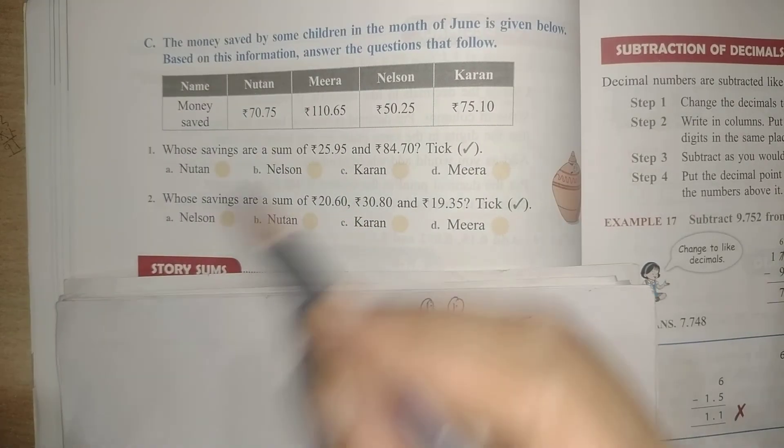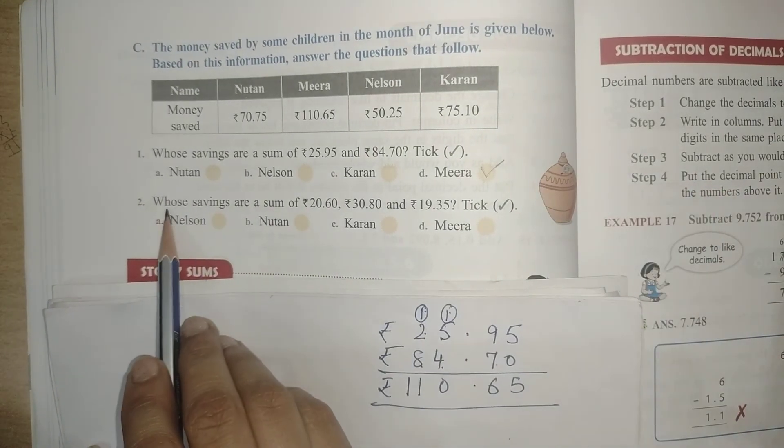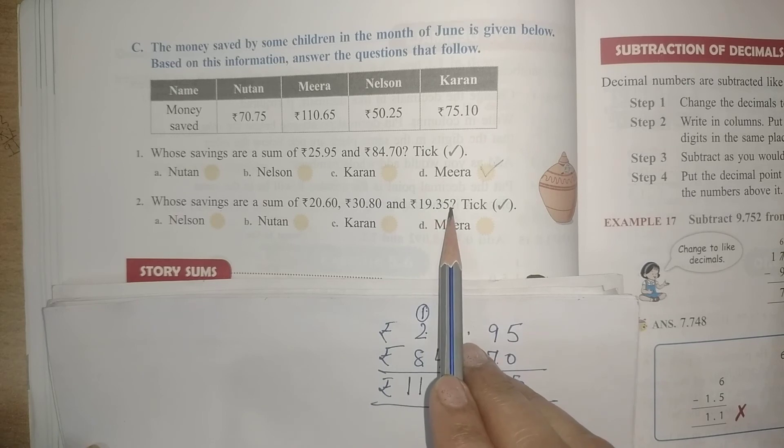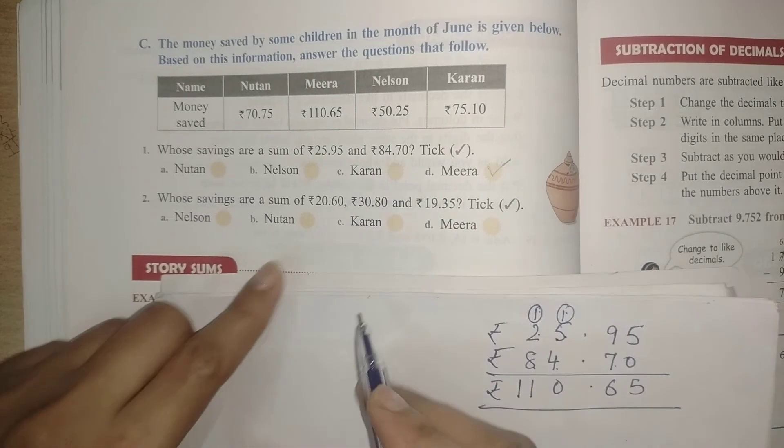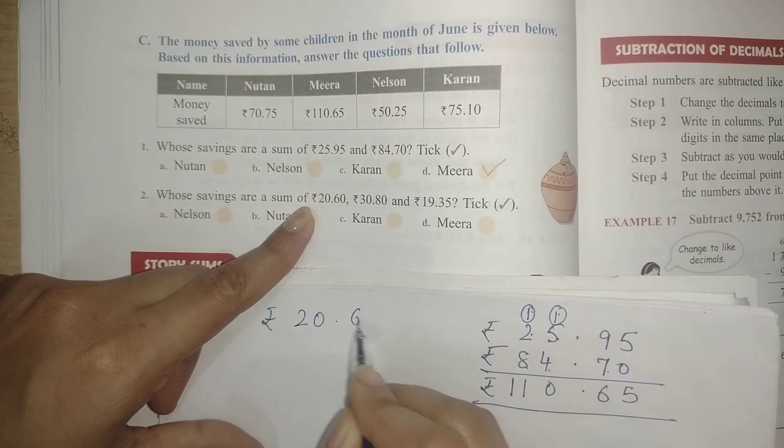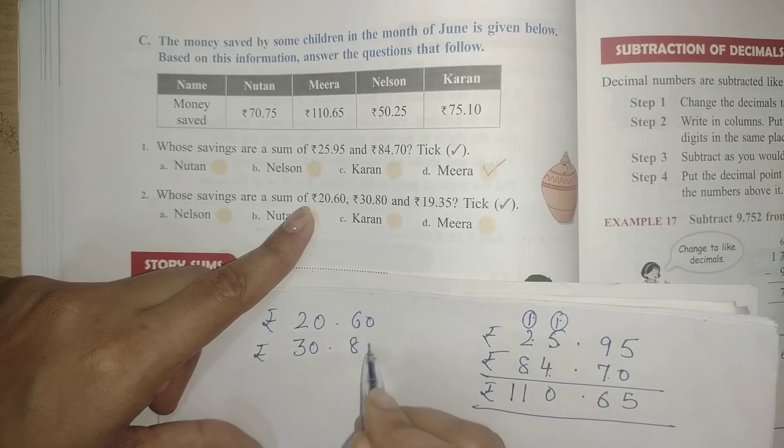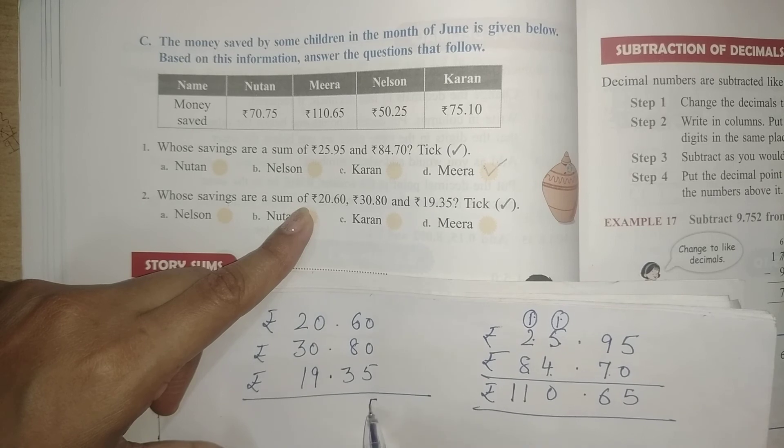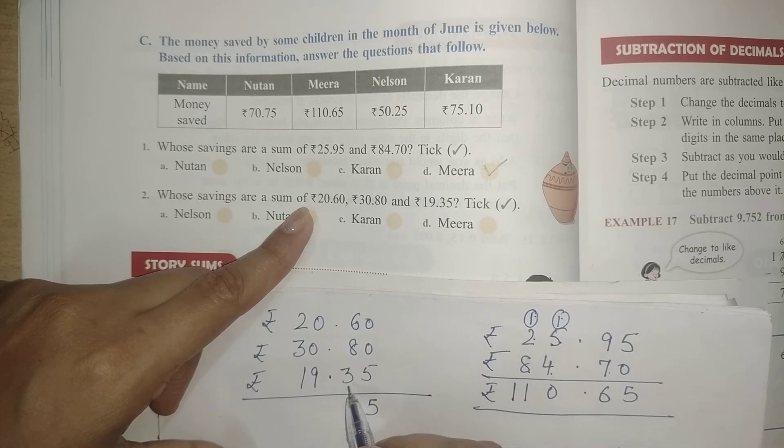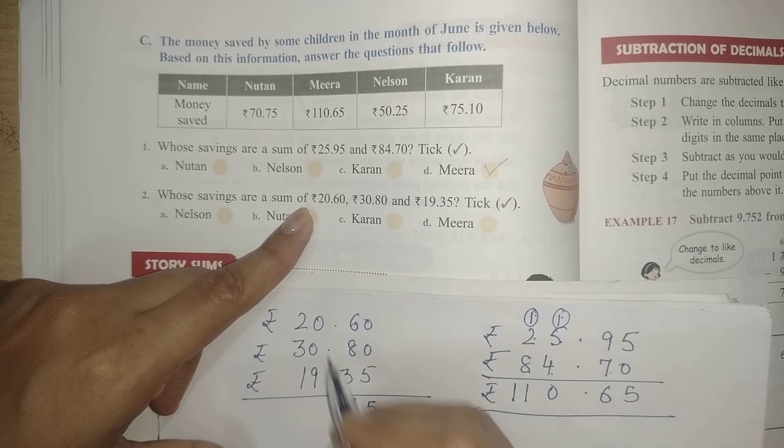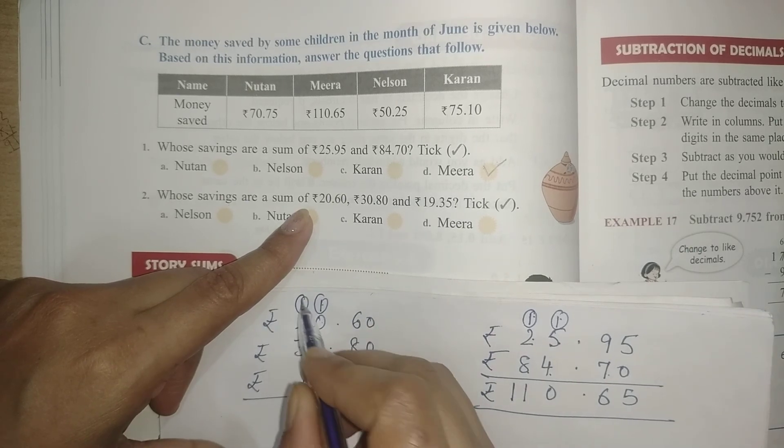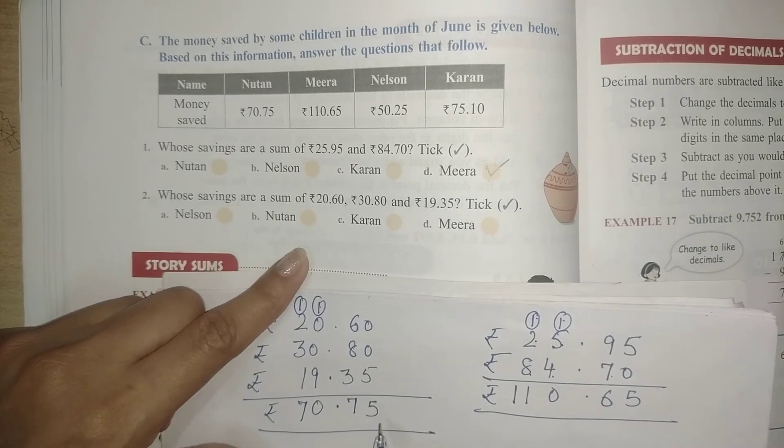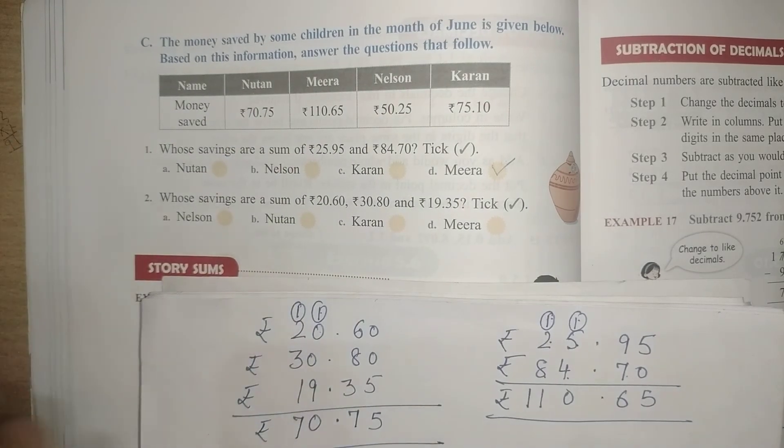Next: whose savings are a sum of 20.60, 30.80, and 19.35 rupees? We have to add all these. Let us add: 20.60, then 30.80, then 19.35. Now let us add: 0 plus 0 plus 5 is 5, 6 plus 8 is 14, 14 plus 3 is 17, then 1 carry over, 1 plus 0 plus 0 plus 9 is 10, 1 carry over, 1 plus 2 is 3, 3 plus 3 is 6, 6 plus 1 is 7. So the total saving is 70.75 rupees. Let's check the chart. Yes, it is of Newton, so let us tick Newton.